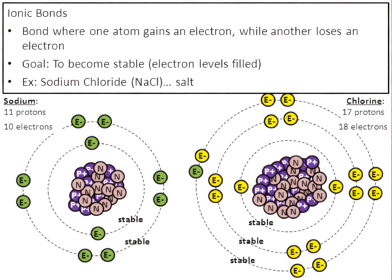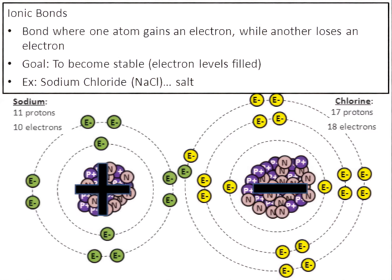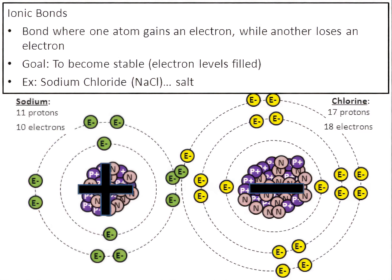But how do these things actually stick together? Sodium is now like a positively charged magnet — it has 11 protons with positive charge and only 10 electrons with negative charge. Because it has more protons, it's positively charged. Chlorine is just the opposite — it now has more negatively charged electrons, giving it a negative charge. When you put a positive and a negative magnet together, they stick. The positive charge of sodium is attracted to the negative charge of chlorine, like two oppositely charged magnets, and that's what holds them together in an ionic bond.